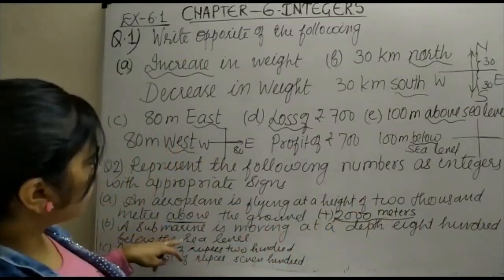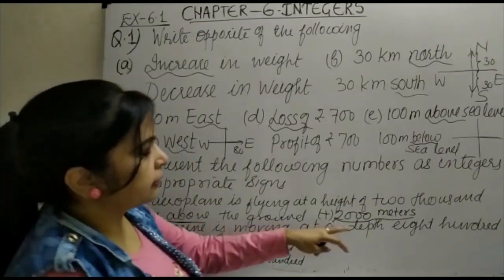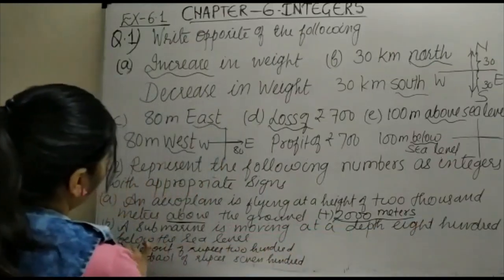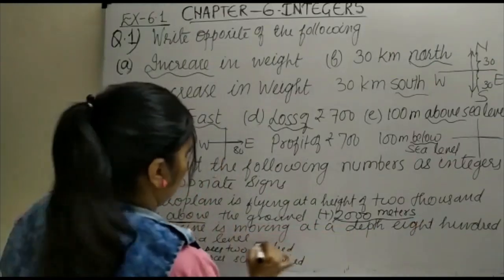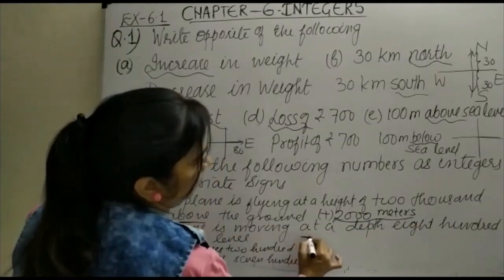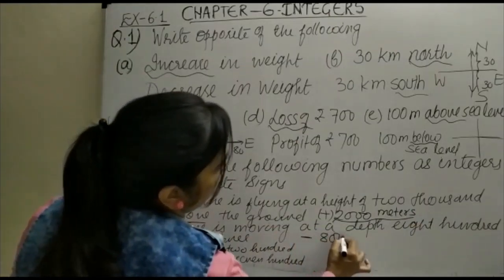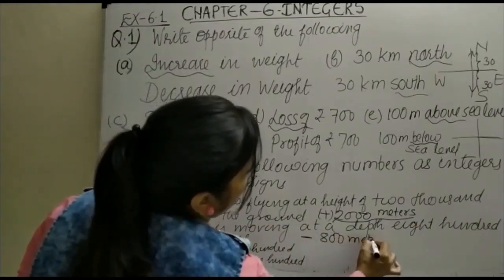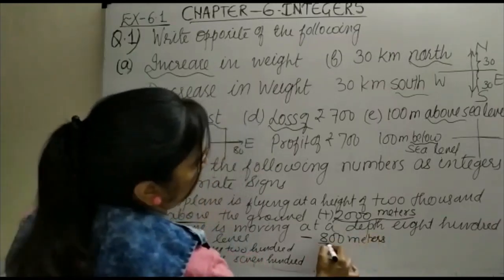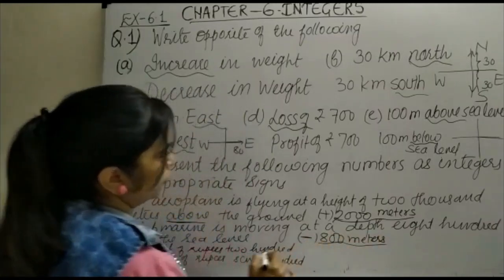Then a submarine is moving at a depth 800 below. Below is minus 800 meters. So this minus is for the below, below sea level.